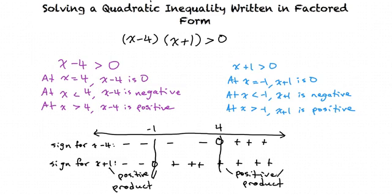However, there is no solution between x equals negative 1 and positive 4, because we multiply a negative by a positive and get a negative product, which does not make the original inequality true.